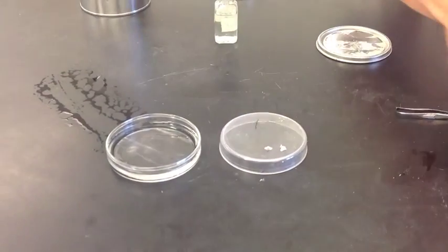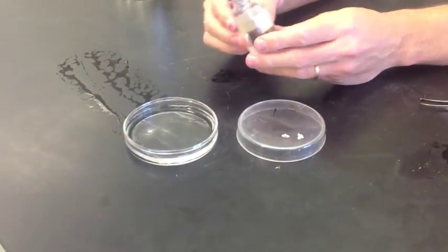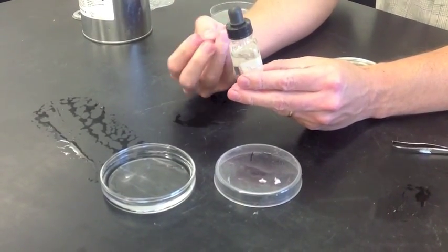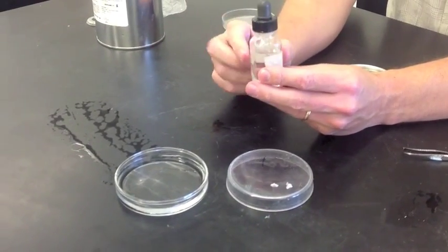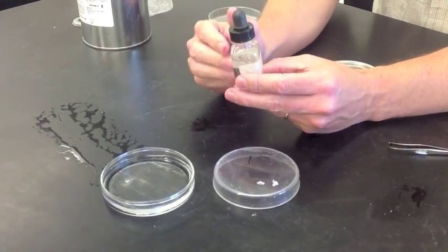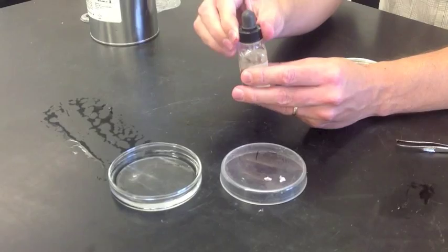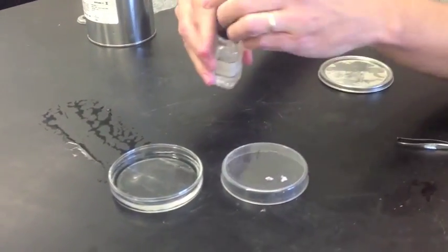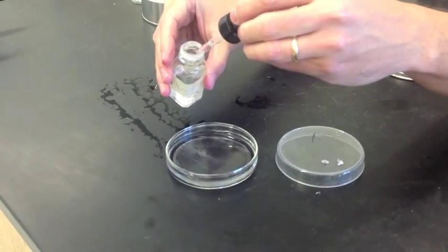Now we're also going to treat the water with something called phenolphthalein. This stuff is a liquid that turns color when a base is present. It's clear when there's no base and it turns pink when there is a base. So if there's a base produced, it should turn pink when we add the sodium.